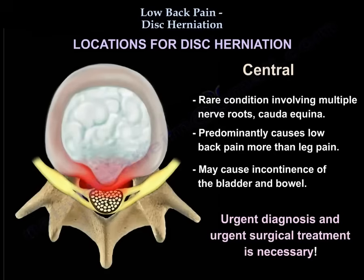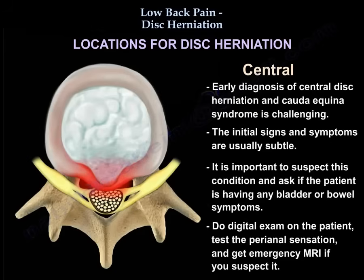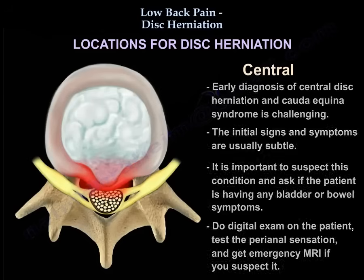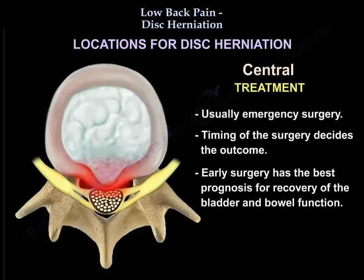Cauda equina syndrome predominantly causes low back pain more than leg pain. In severe cases it may cause incontinence of the bladder and bowel, requiring urgent diagnosis and urgent surgical treatment. Early diagnosis of central disk herniation and cauda equina syndrome is challenging, as the initial signs and symptoms are usually subtle. It is important to suspect this condition, ask the patient about bladder or bowel symptoms, perform a digital rectal exam, test perianal sensation, and get an emergency MRI if you suspect it. Treatment is usually emergency surgery, and timing of surgery decides the outcome — early surgery has the best prognosis for recovery of bladder and bowel function.